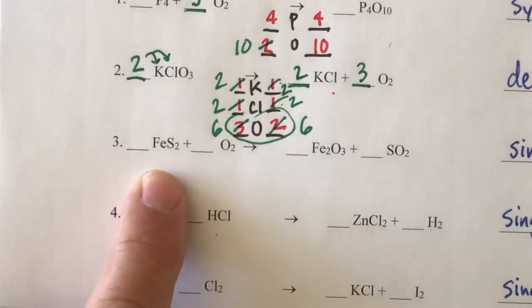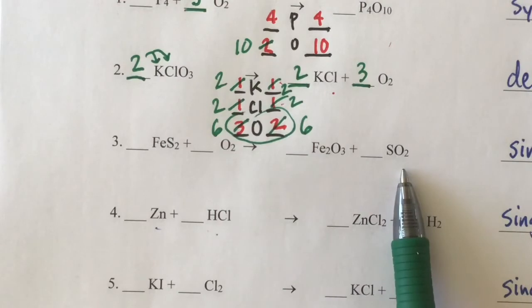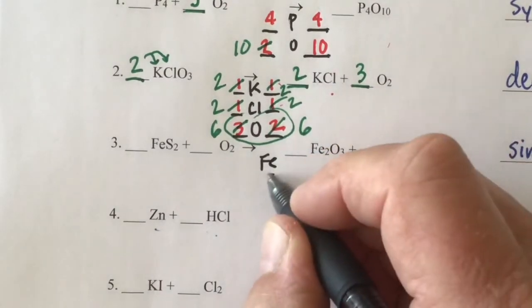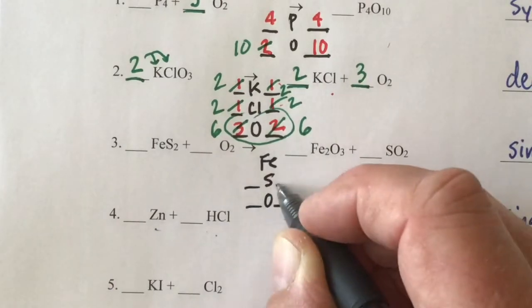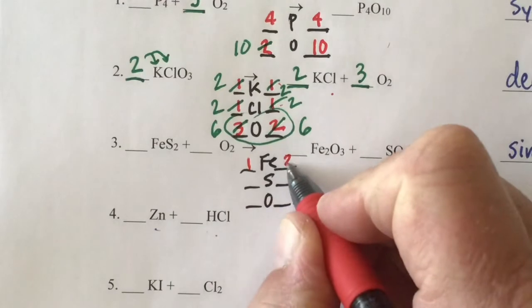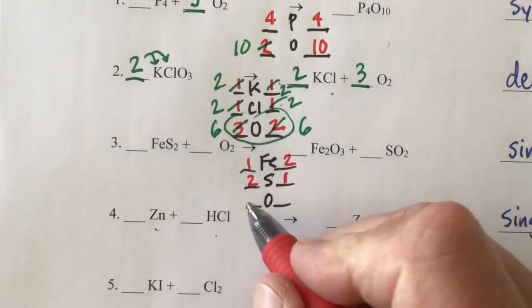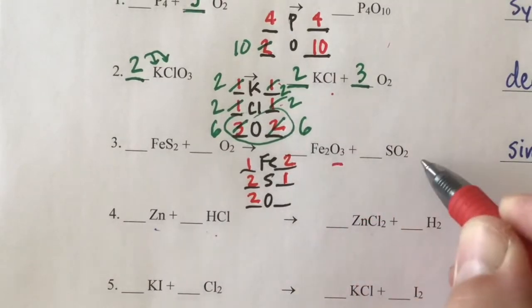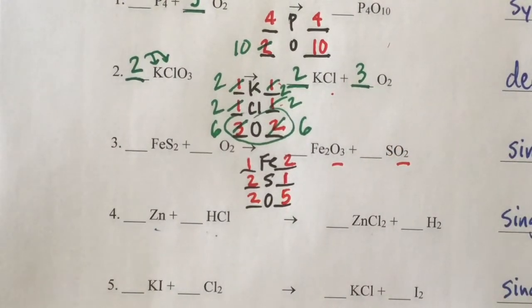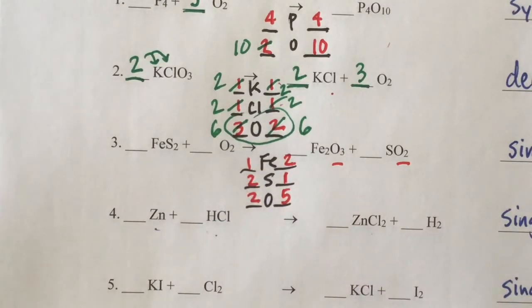Here we have iron sulfide and oxygen giving us iron oxide and sulfur dioxide. We list iron, sulfur, and oxygen. One iron in the reactants, two in the products; two sulfurs in the reactants, one in the products; two oxygens on the reactant side, and three plus two — a total of five oxygens on the product side. Since oxygen is by itself, we can put a coefficient there and only change oxygens, so we'll do oxygens last.